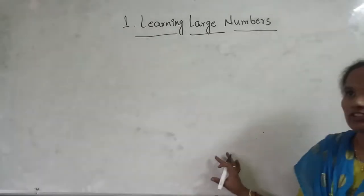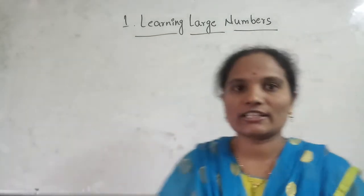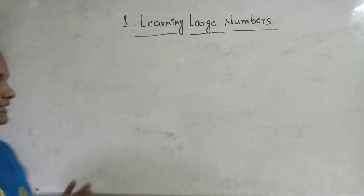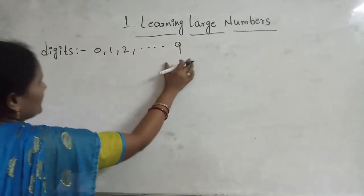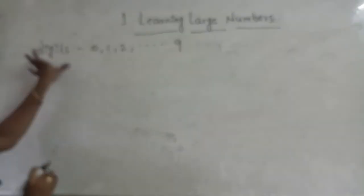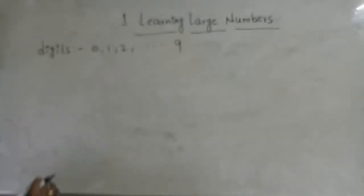Before we learn large numbers, what is the difference between digits and the numbers? First, we know digits from 0 to 9. These are digits. I will take digits. I am forming numbers.